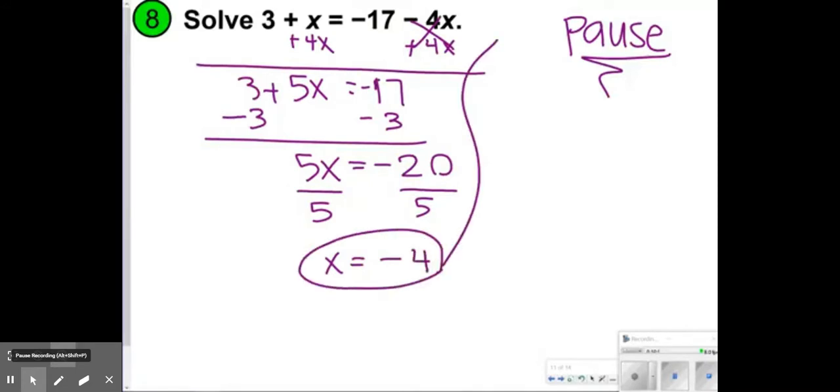That's a good one to check. Is 3 plus negative 4 the same as negative 17 minus 4 times negative 4? This gives us negative 16. So negative 17 and positive 16 gives negative 1, and 3 plus negative 4 also gives negative 1.